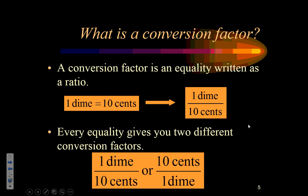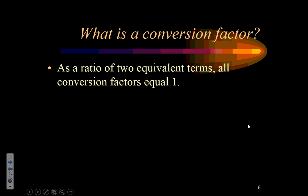Every equality actually gives you two different conversion factors. So, both of these would be valid ratios for that one equality. And that's an important thing to remember. Every equality gives us two different types of tools. Tools that will convert one unit, like cents, into dimes. And written differently, we can use it to convert dimes into cents.